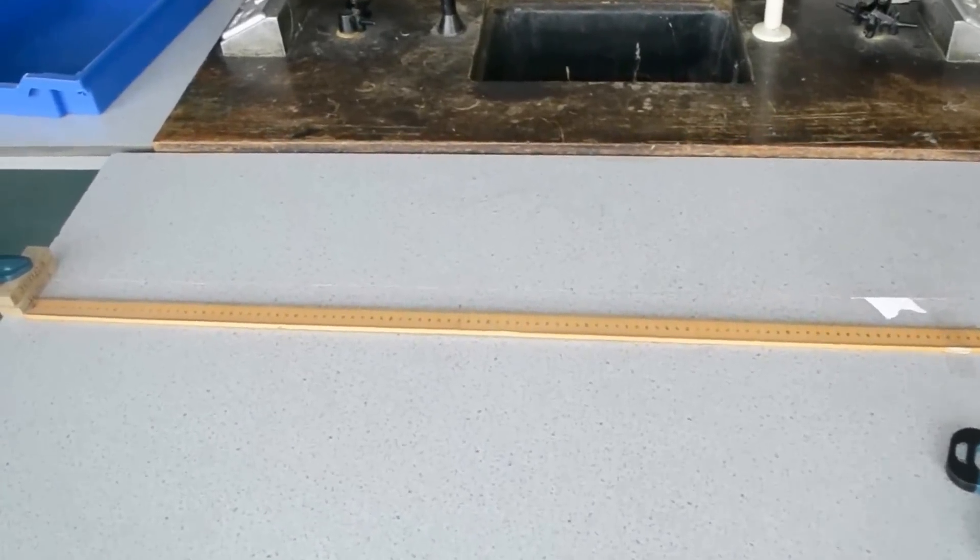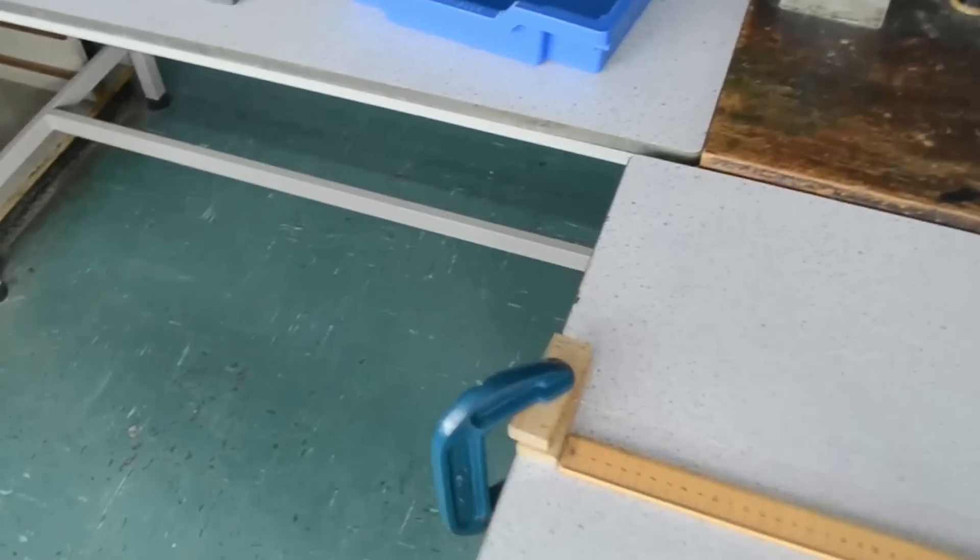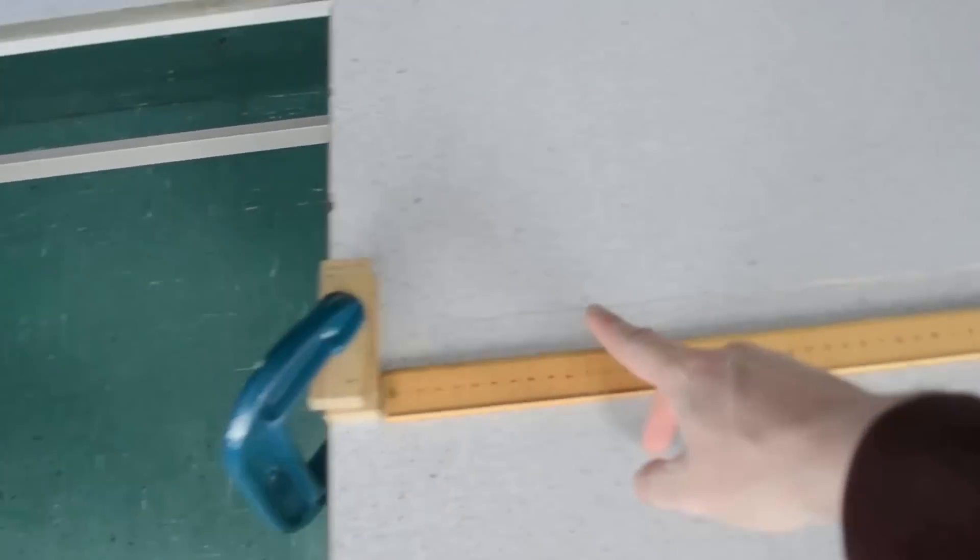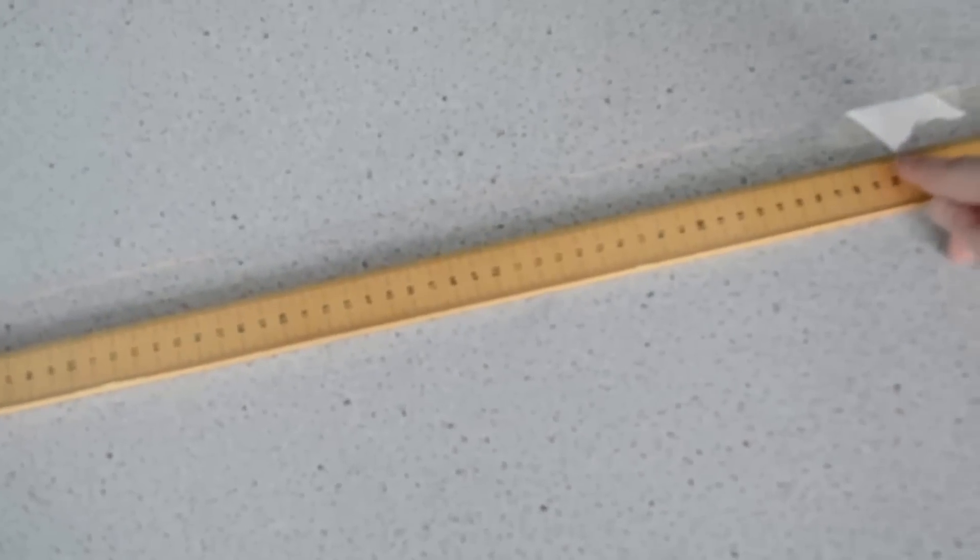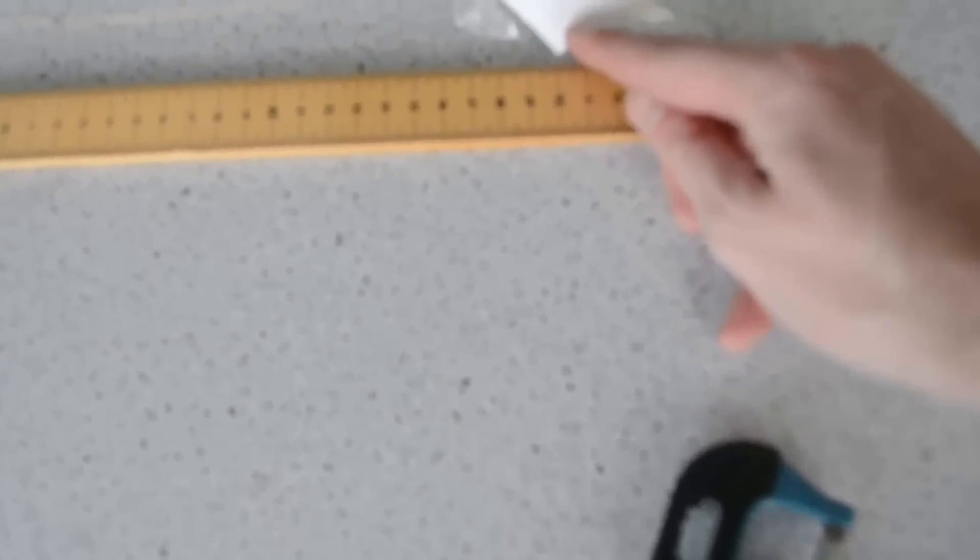So to calculate the strain we need the original length of the wire. In this case we are interested in the length between the wooden blocks and the marker, which in this case is 90 centimeters, 0.9 meters.